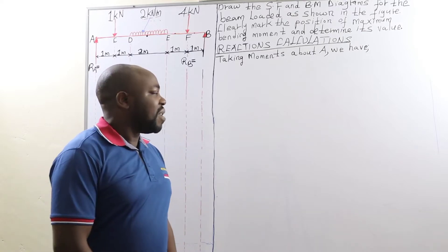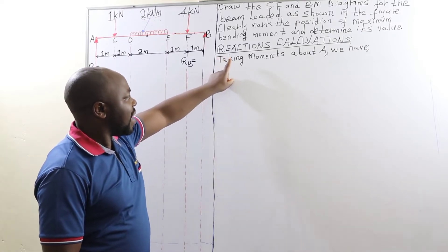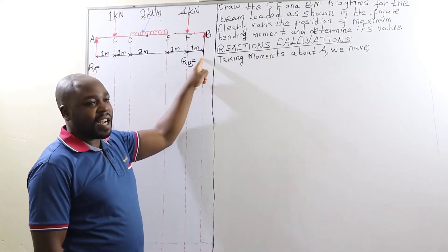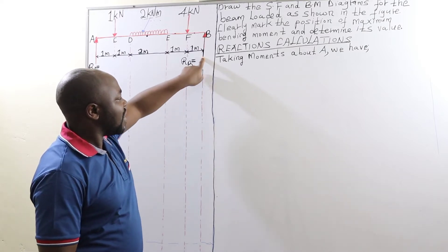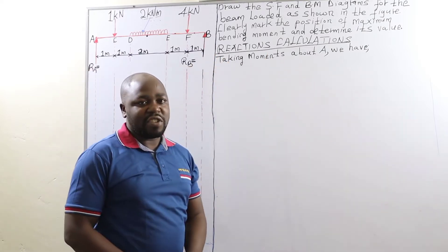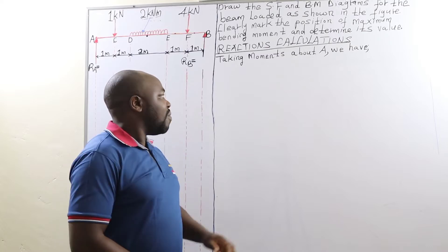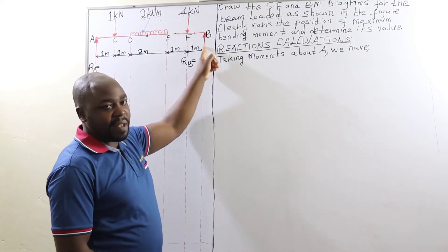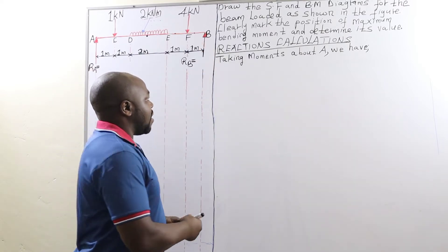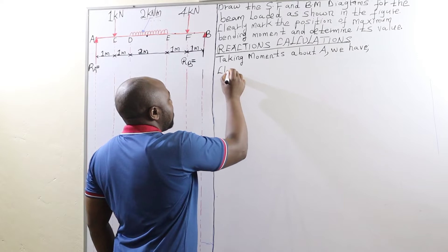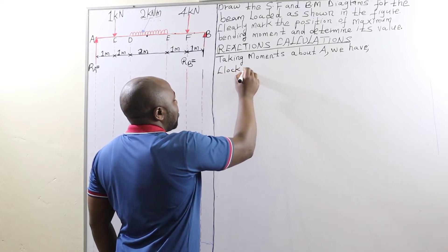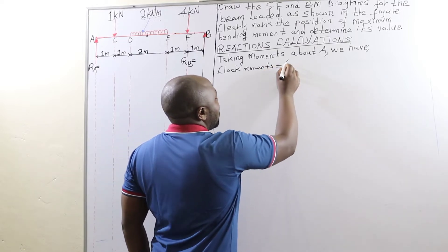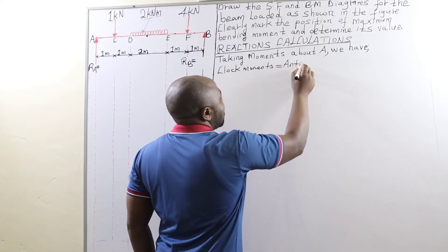Our first step will be to determine the value of the reactions at support A as well as at support B, so we are going to begin with the reaction calculations. To get the value of the reactions, we are going to take moments about point A from end B. Remember, the value of clockwise moments must be equal to anticlockwise moments.